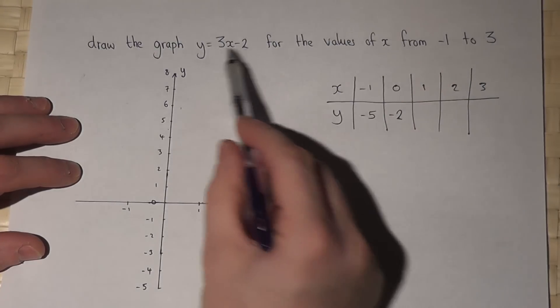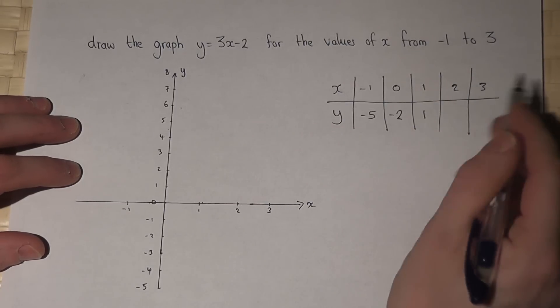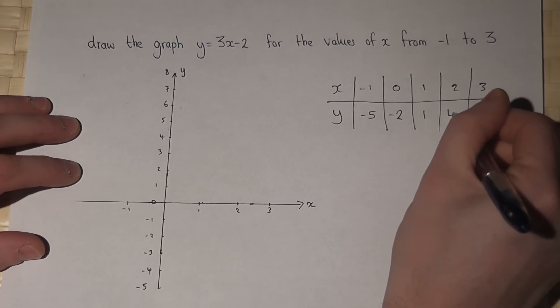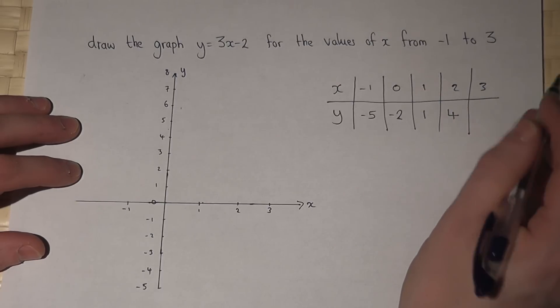So I'll keep on going. 3 times 1 is 3, take away 2 is 1. 3 times 2 is 6, take away 2 is 4, and 3 times 3 is 9, take away 2 is 7.